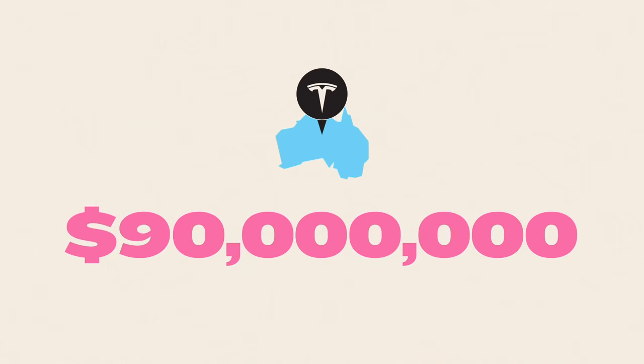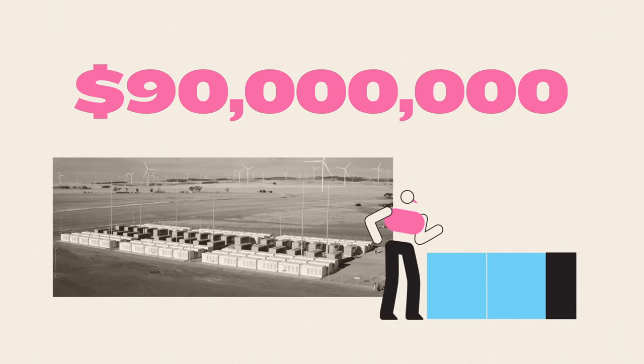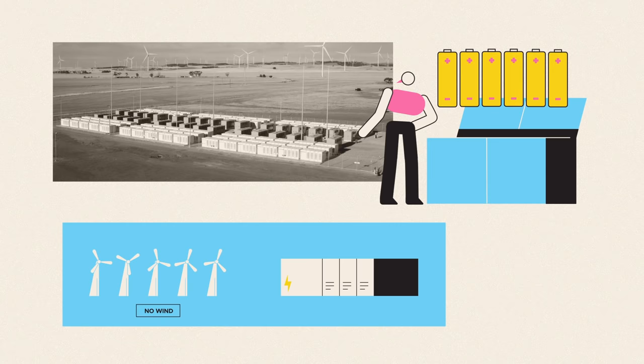In 2017, Tesla won a $90 million contract to construct a power reserve at the Hornsdale Wind Farm in Australia. The result is a large plot of land covered with fridge-sized containers filled with battery cells, which store energy when surplus amounts are being generated by the wind farm, and then release it into the power grid when supply is low.